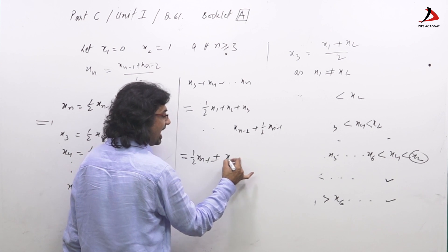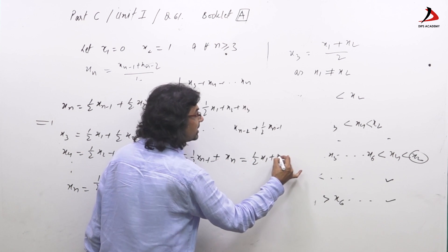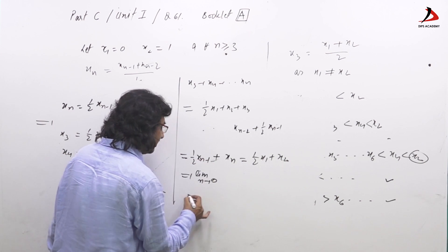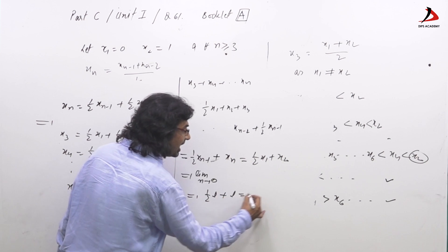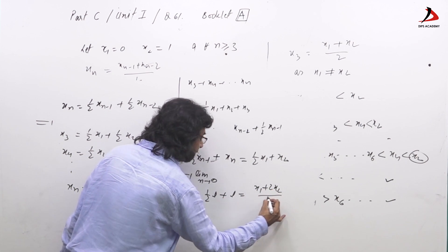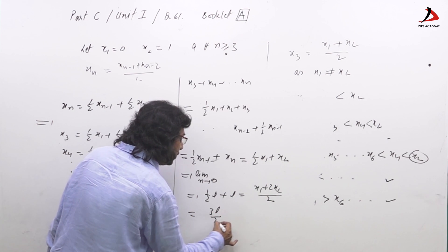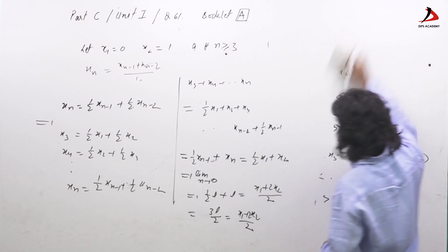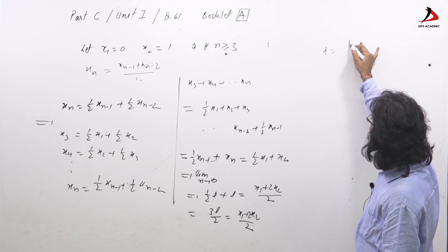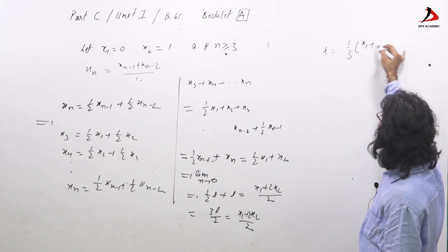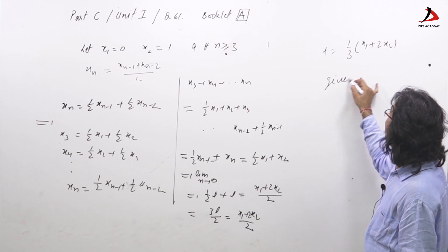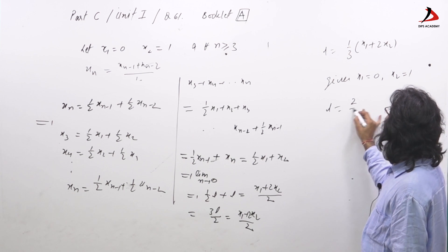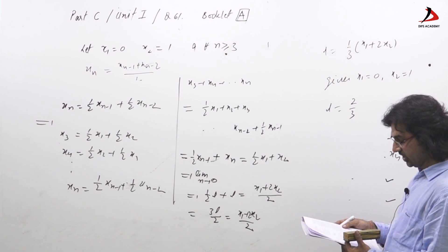After telescoping, this simplifies to: xₙ = (1/2)x₁ + (1/2)x₂ as n → ∞ in the telescoped form, giving (1/2)l + l = (x₁ + 2x₂)/2, hence 3l/2 = (x₁ + 2x₂)/2, and therefore l = (x₁ + 2x₂)/3. Given x₁ = 0 and x₂ = 1, we get l = 2/3. So option 4 is correct.